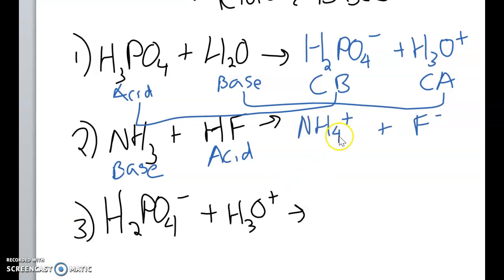You will form NH4+, because the base here accepted an H+ from the acid and turned into NH4+ because it got an H and it got a plus. And your acid, since it lost its H+, is now left as F-.